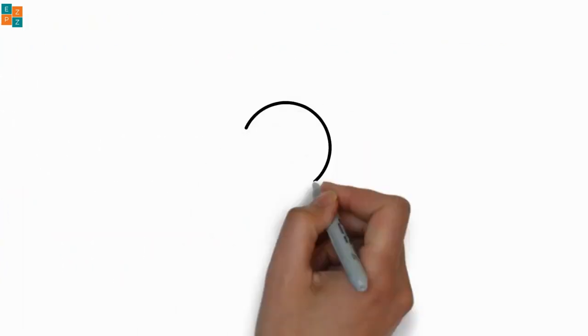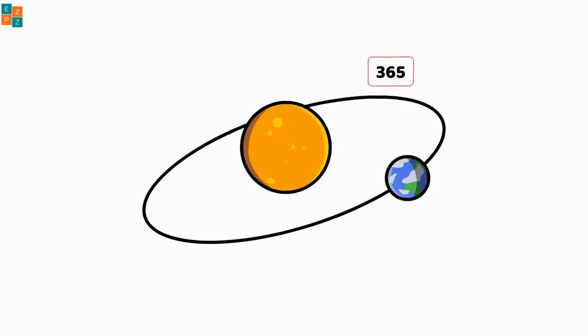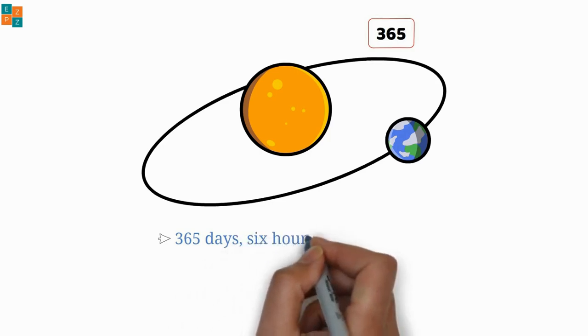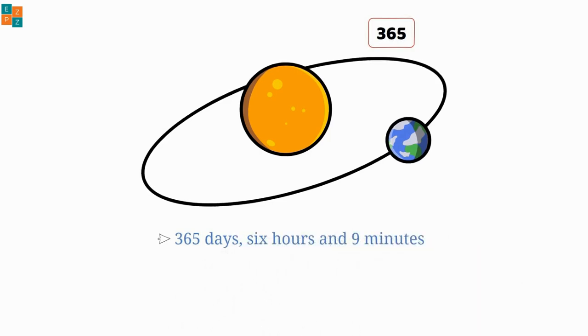But the Earth doesn't complete its journey around the Sun in exactly 365 days. It actually takes about 365 days, 6 hours, and 9 minutes every year to make a full revolution around the Sun.